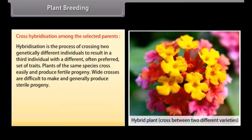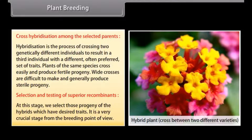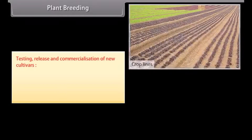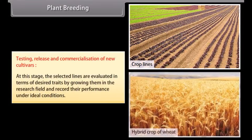Plants of the same species cross easily and produce fertile progeny. Wide crosses are difficult to make and generally produce sterile progeny. Selection and testing of superior recombinants: at this stage, we select those progeny of the hybrids which have desired traits. It is a very crucial stage from the breeding point of view. Testing, release and commercialization of new cultivars: the selected lines are evaluated in terms of desired traits by growing them in the research field and recording their performance under ideal conditions.